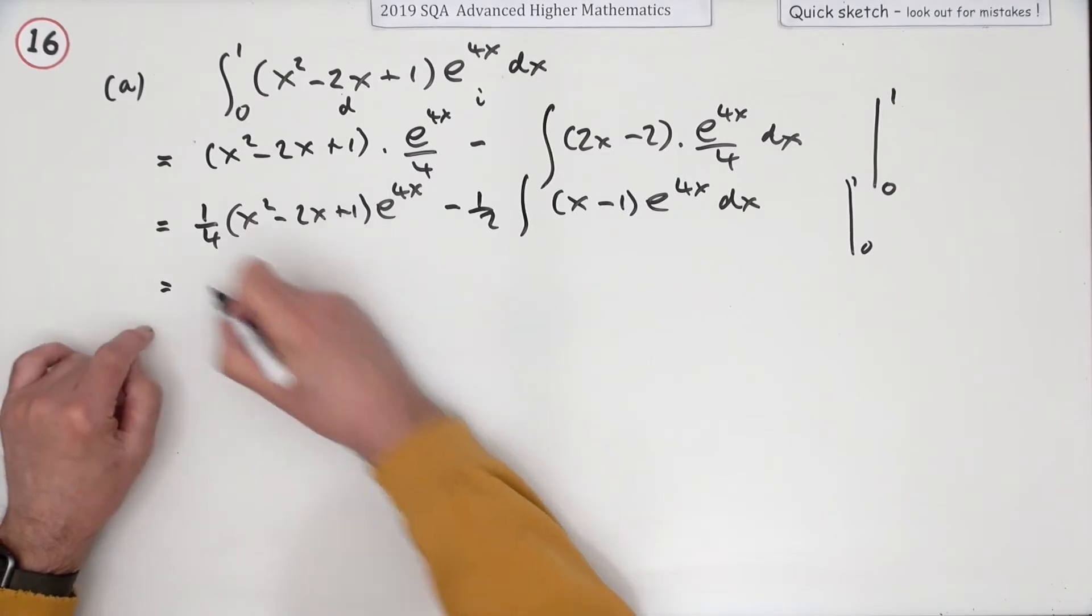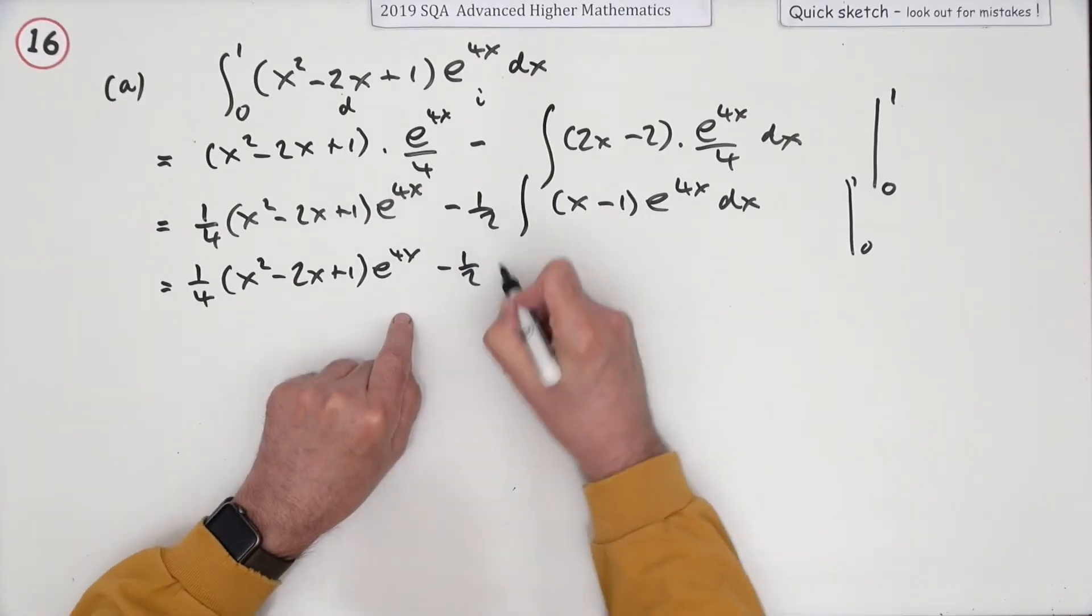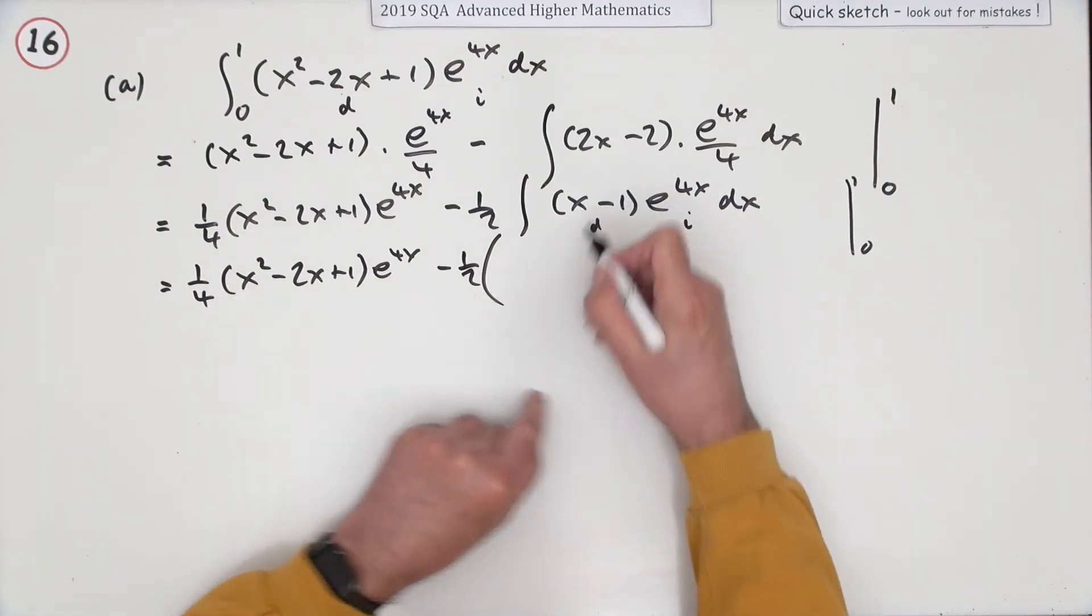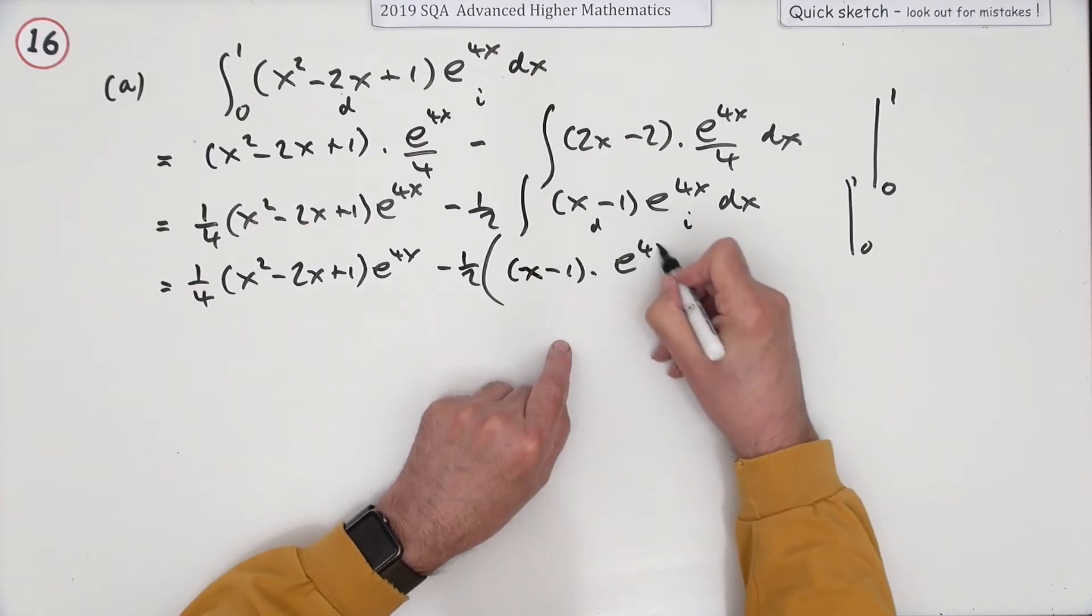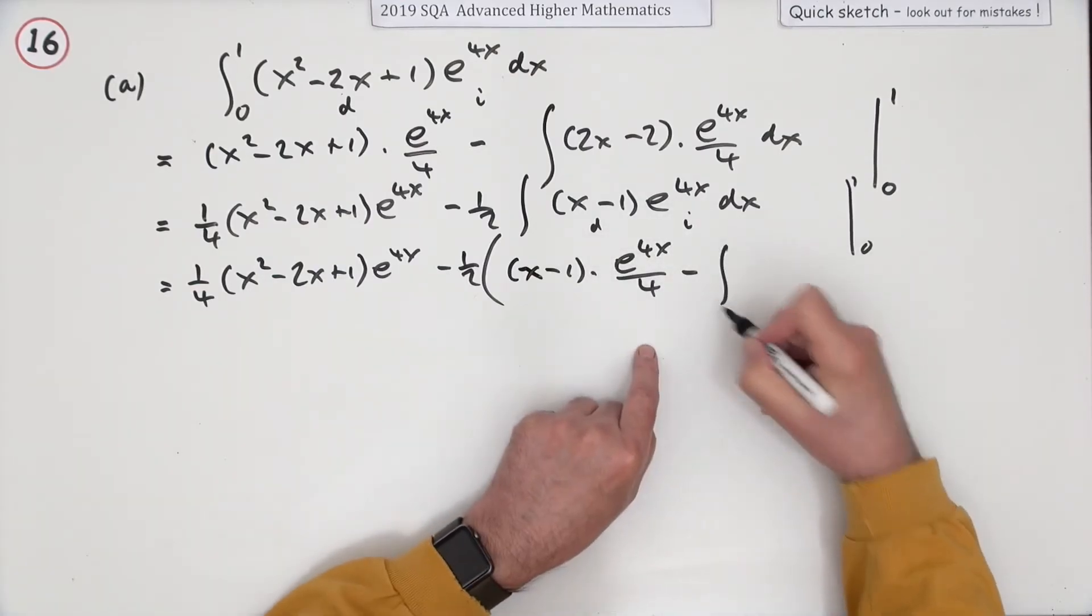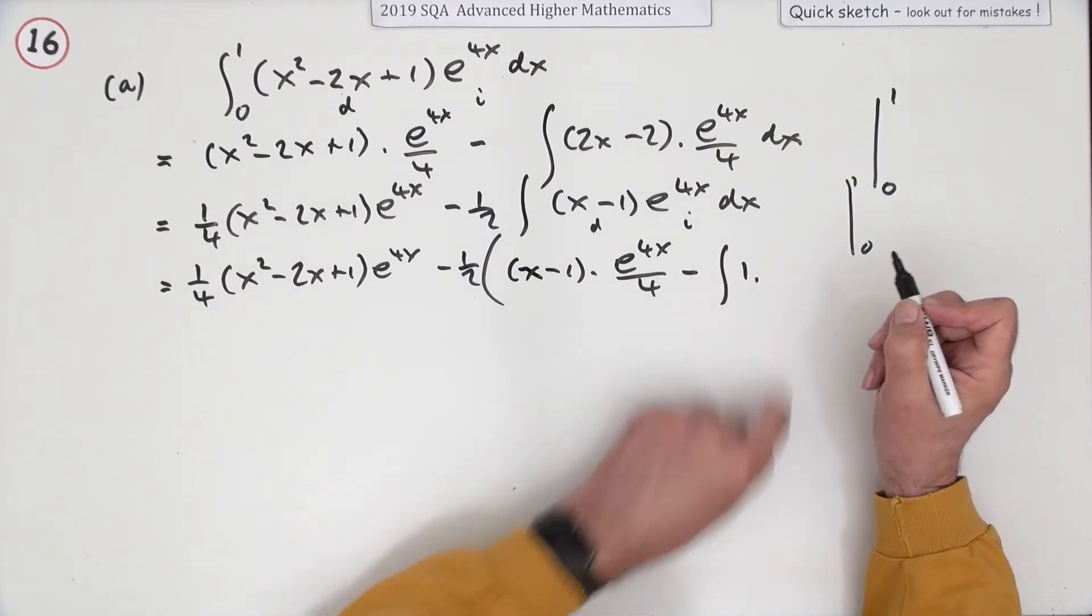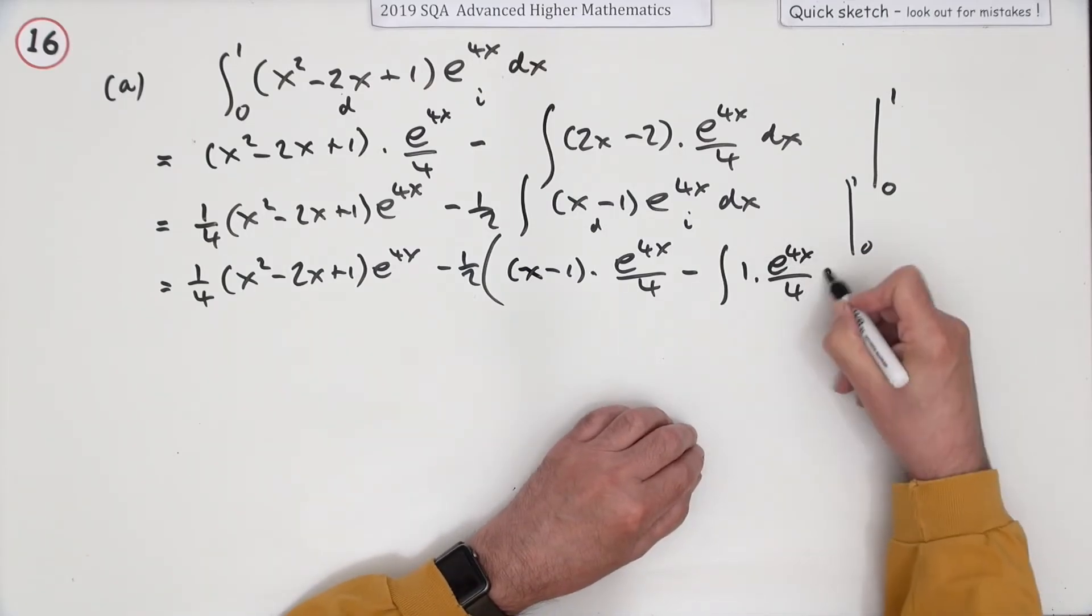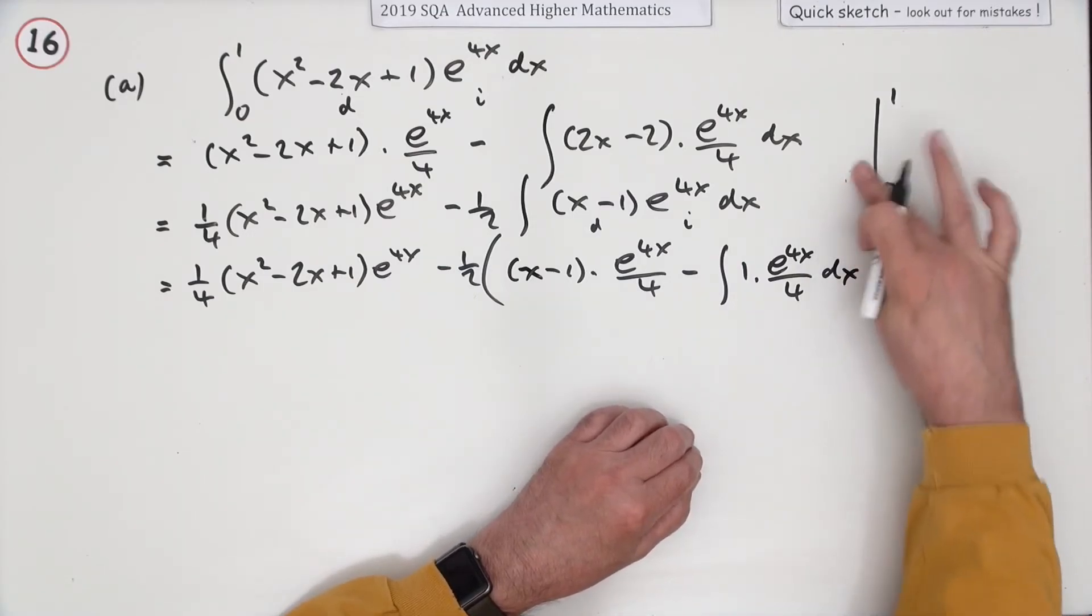So minus a half of, now start again: differentiate to whittle it away, integrate leave it alone because you're integrating first. So it's back to the same thing, e to the 4x upon 4, minus the integral of, now that finally differentiates down to 1, carry that forward. Close that bracket, evaluate.